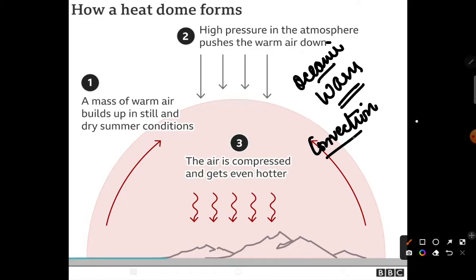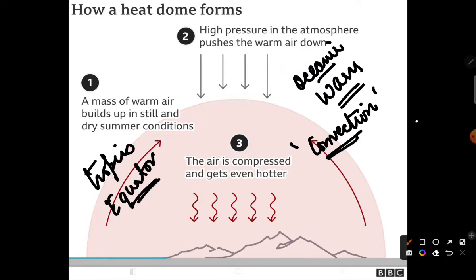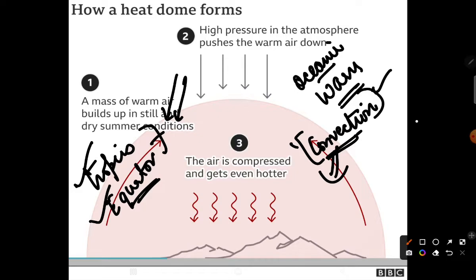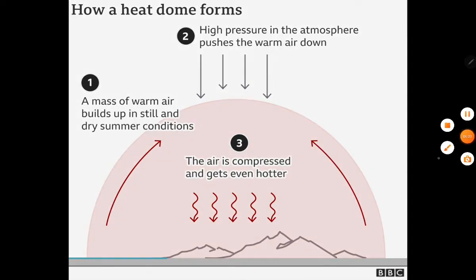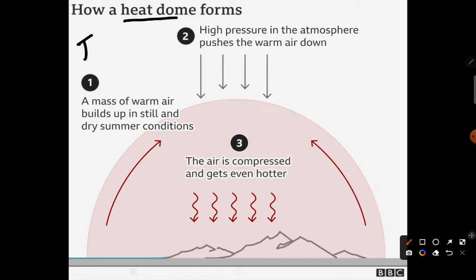Conventional rainfall hoti hai un jagaon pe jahan direct sun ki radiations padti hain — tropics aur equator wale regions mein. Jab bhi rainfall warm water ke evaporate hone se hoti hai, that is conventional rainfall. Heat dome ka concept aapke US aur Canada mein mostly garmiyon mein, June-July ke mahinon mein, dekha jaata hai.